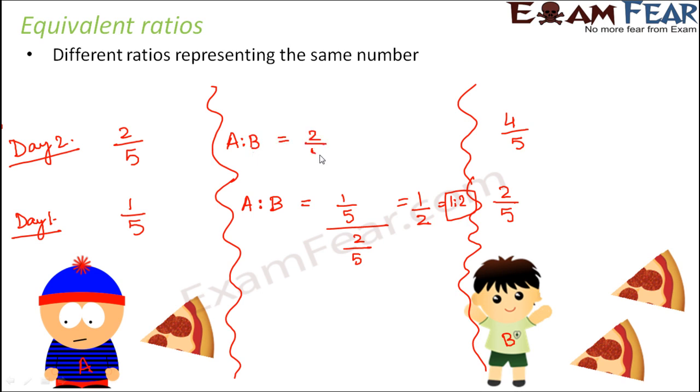That is 2/5 divided by 4/5, that is 2 is to 4. Now if you compare these two ratios, on day 1 the ratio was 1 is to 2, on day 2 it was 2 is to 4.